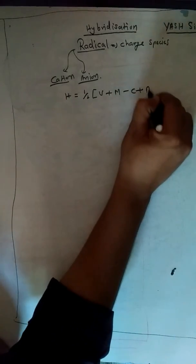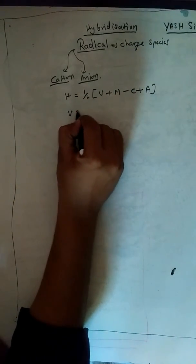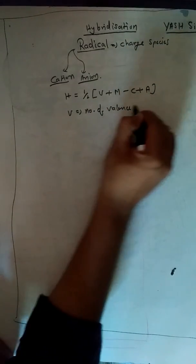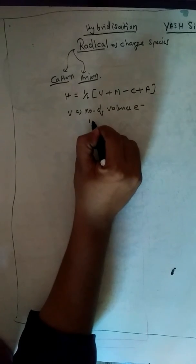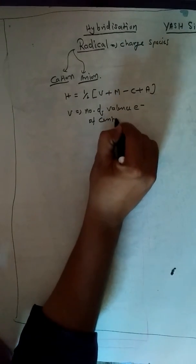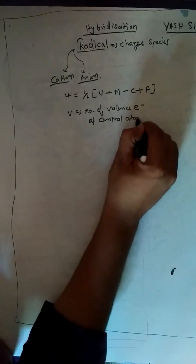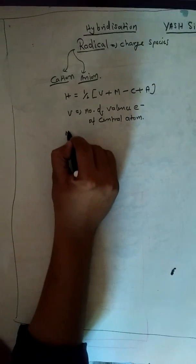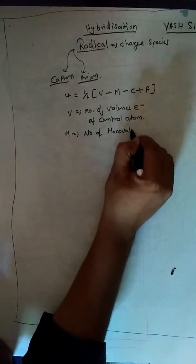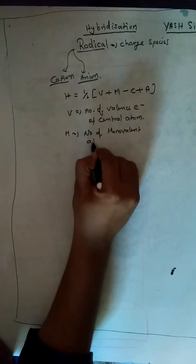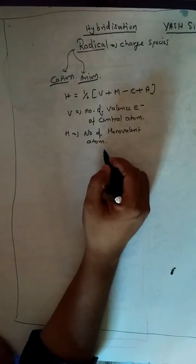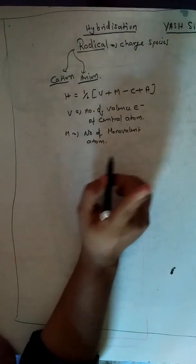where V stands for number of valence electrons of central atom, N stands for number of monovalent atoms. Monovalent atoms are those atoms which can form only a single bond.